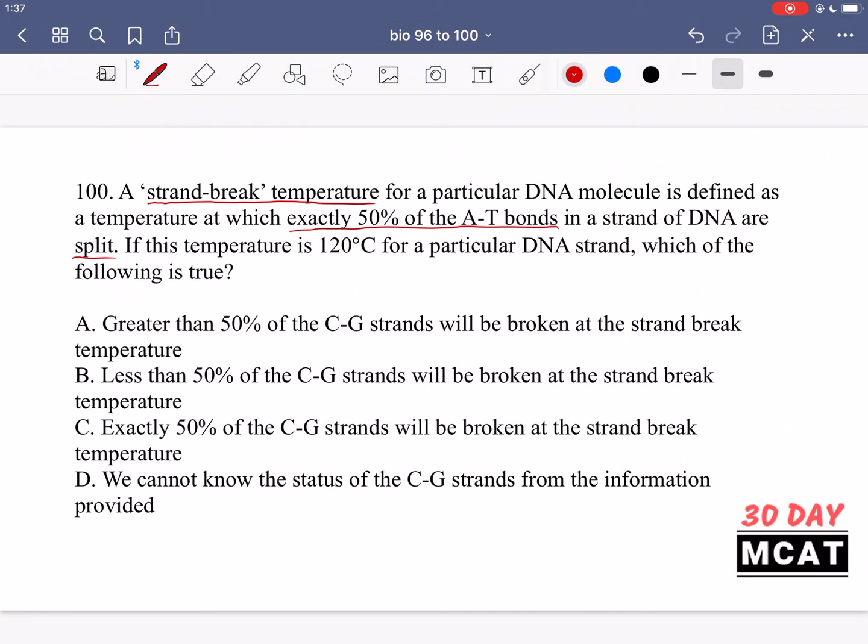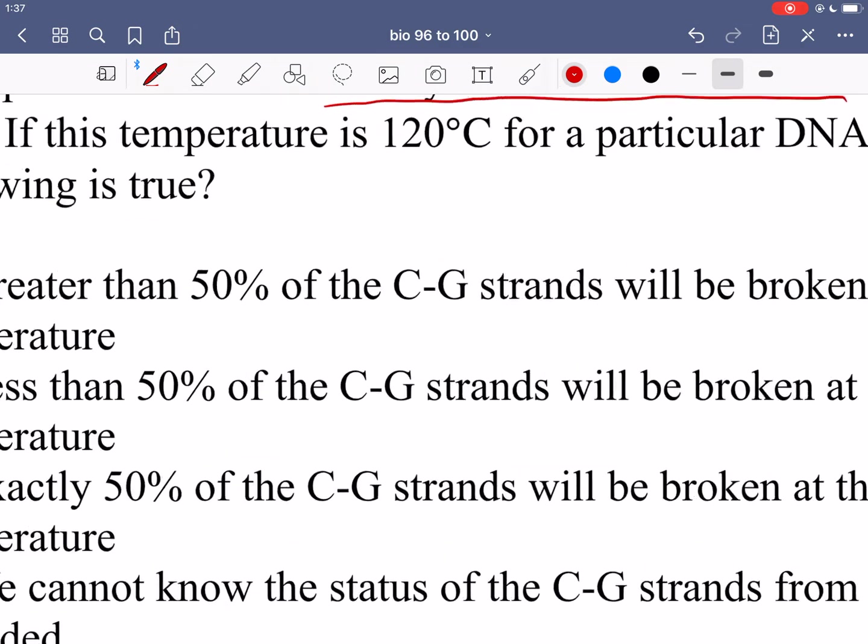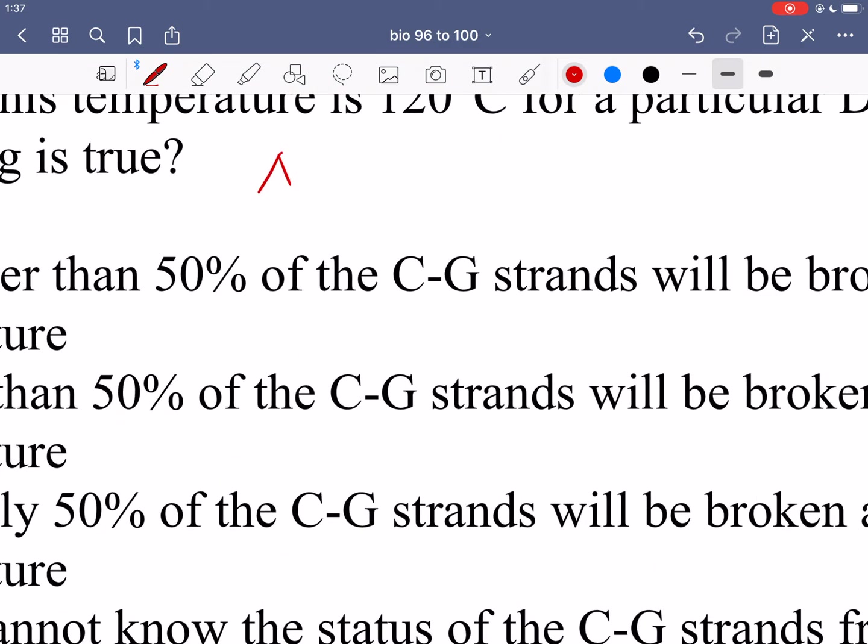Now we're asked what is true for a particular strand if we have this as its strand break temperature. So for this question all the answer options are talking about CG strands. So just know that in an AT bond you have two hydrogen bonds whereas between C and G we have three hydrogen bonds.